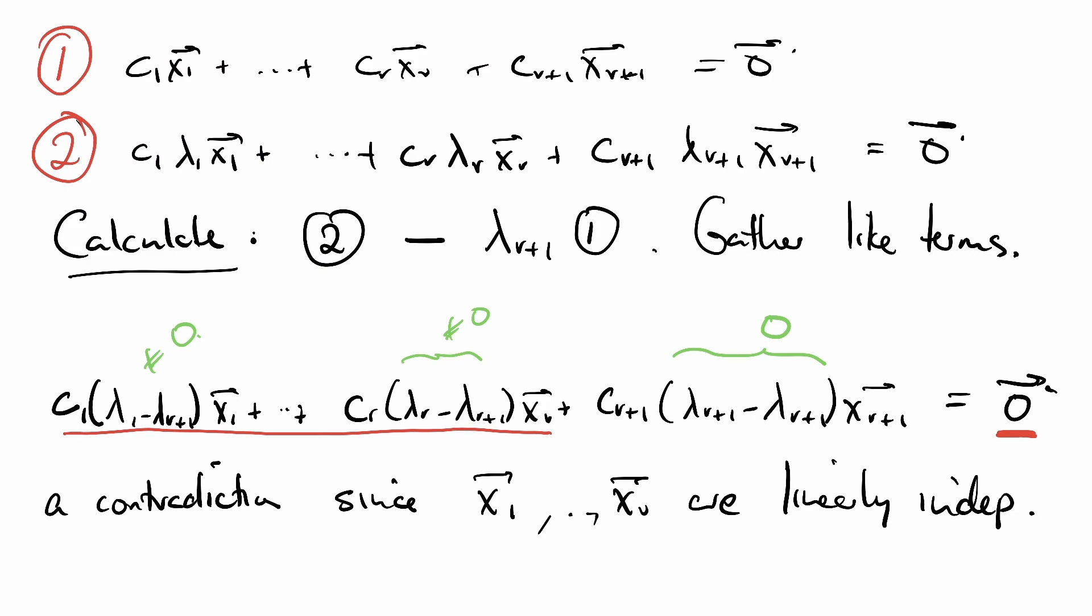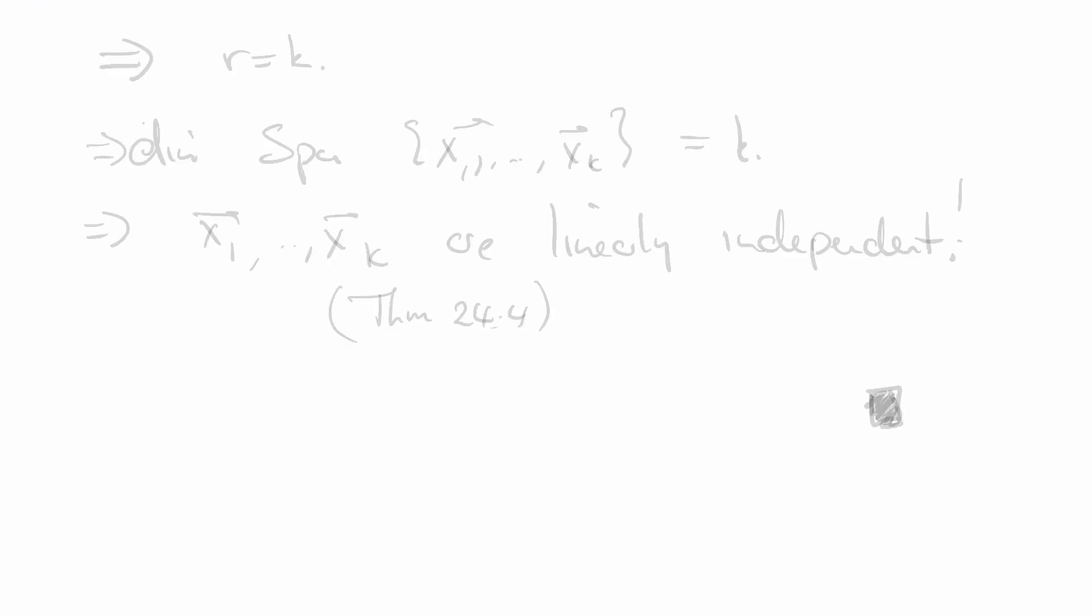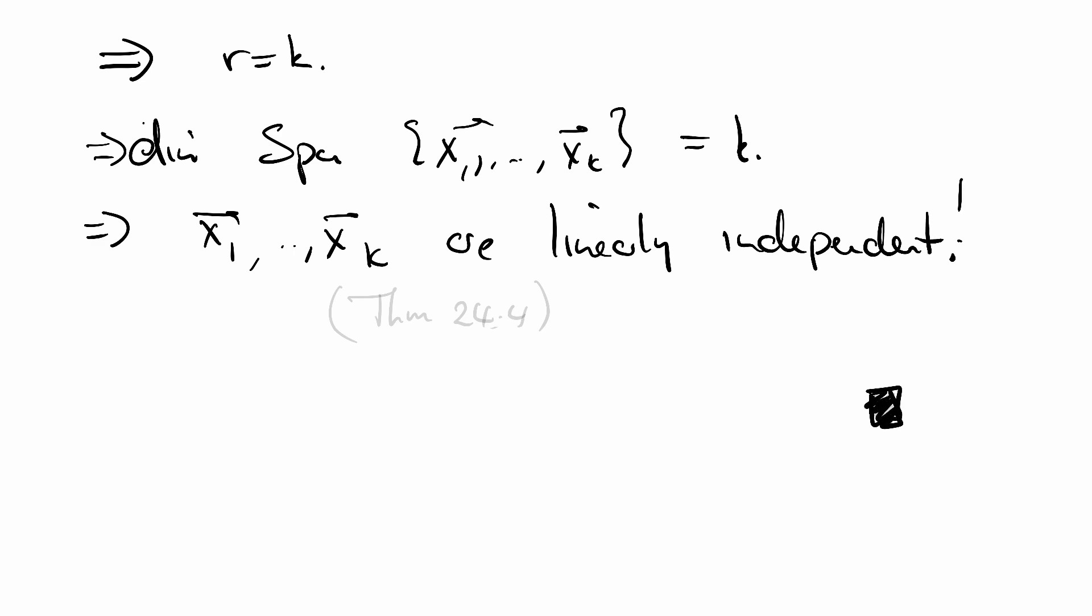We've arrived at our contradiction. What did we contradict? We contradicted the fact that r was less than k, so we can conclude that r is k. This means that the dimension of the span of x₁ through xₖ is k, and this means that x₁ through xₖ are linearly independent. QED, end of proof.